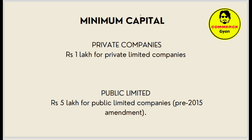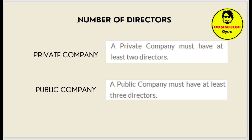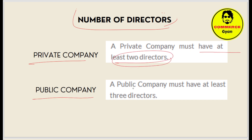The minimum capital required is rupees one lakh for a private limited company and rupees five lakh for a public limited company — this is the pre-2005 amendment figure. Regarding directors: a private company must have at least two directors, and a public company must have at least three directors.